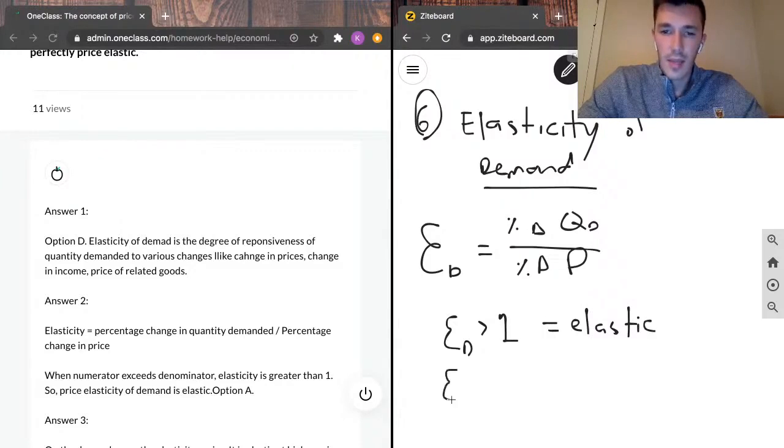We can get that the elasticity of demand is equal to one, which means that the change in quantity demanded and the change in price move proportionally. And this would say that it's unit elastic or perfectly elastic. I'm going to write unit elastic here.